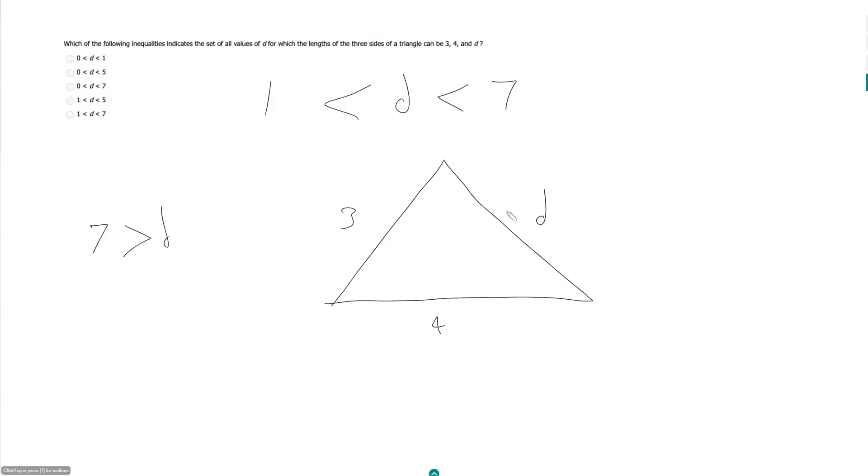It also means that this side here plus this side here must be greater than this side here. So that means 3 plus D must be greater than 4. D must be greater than 1.